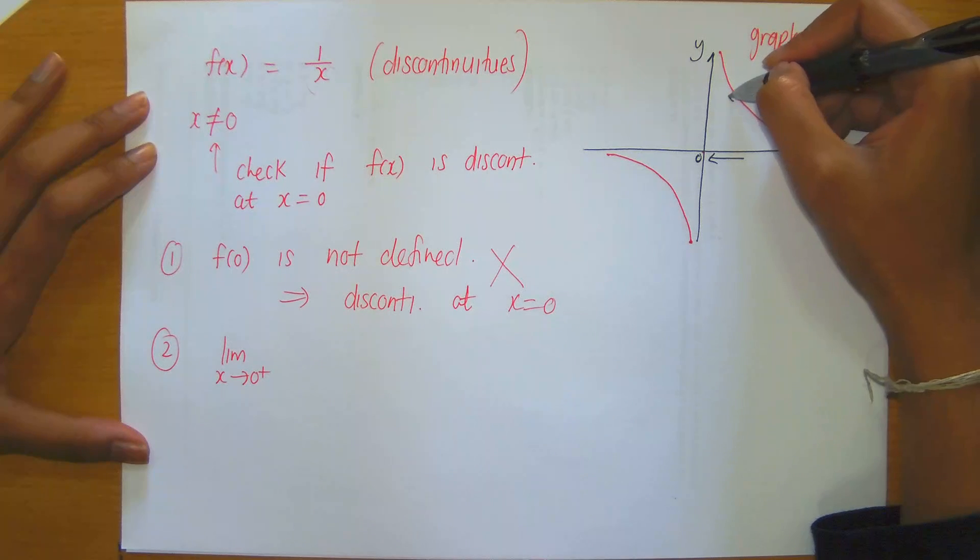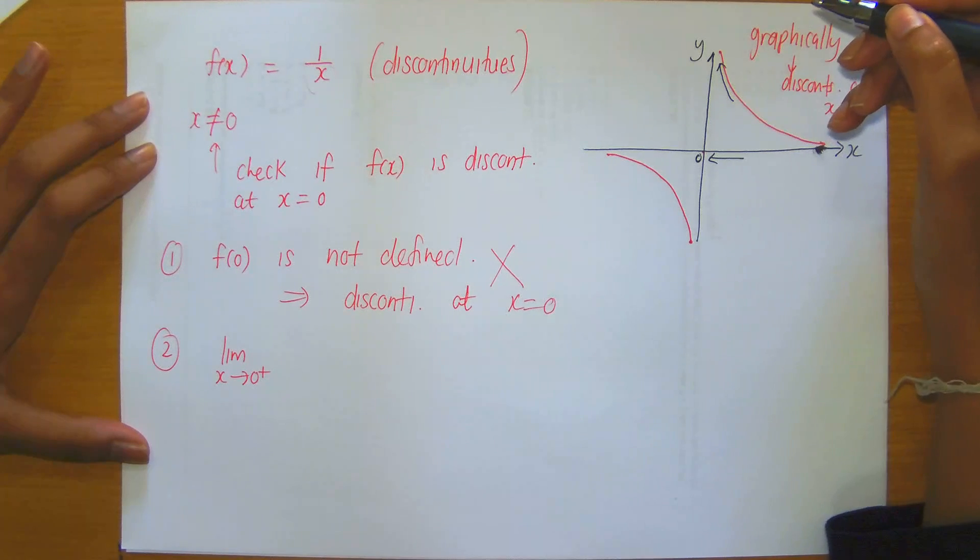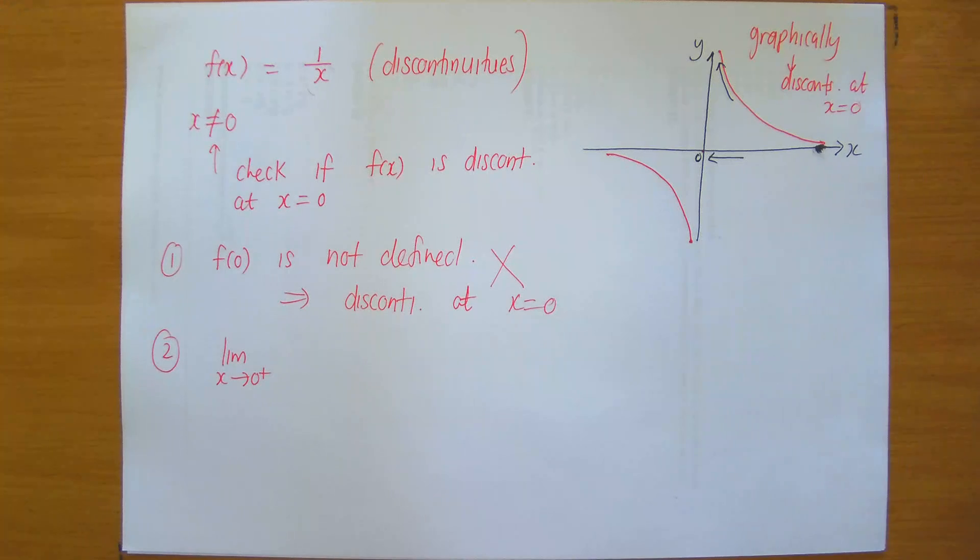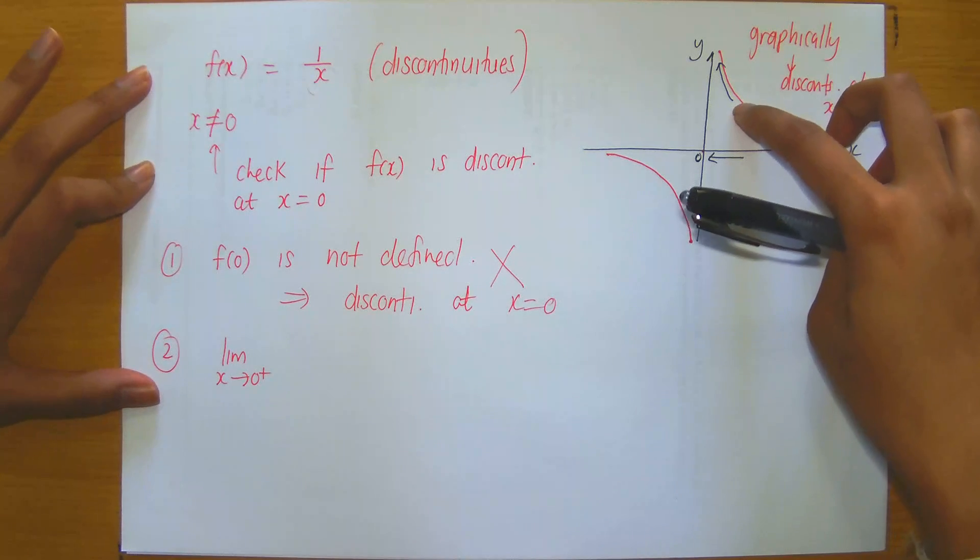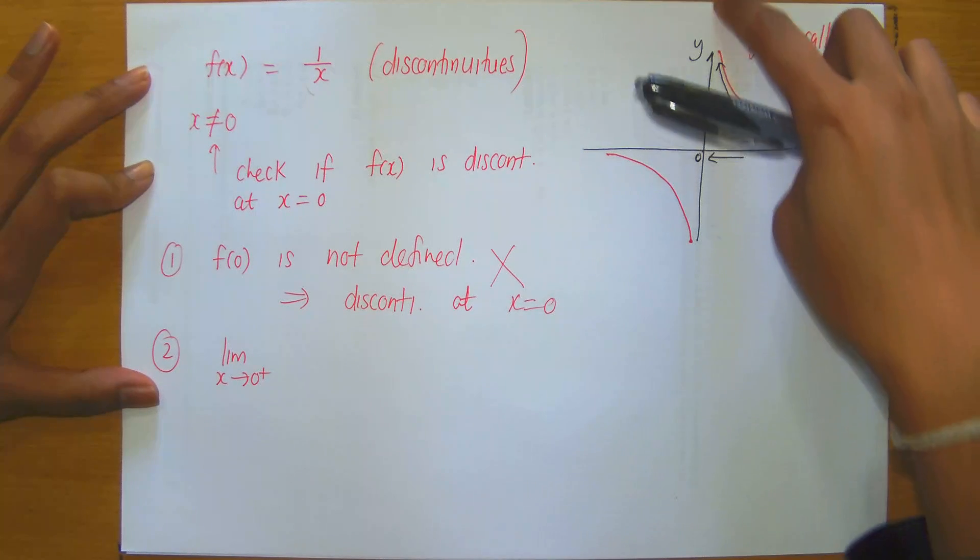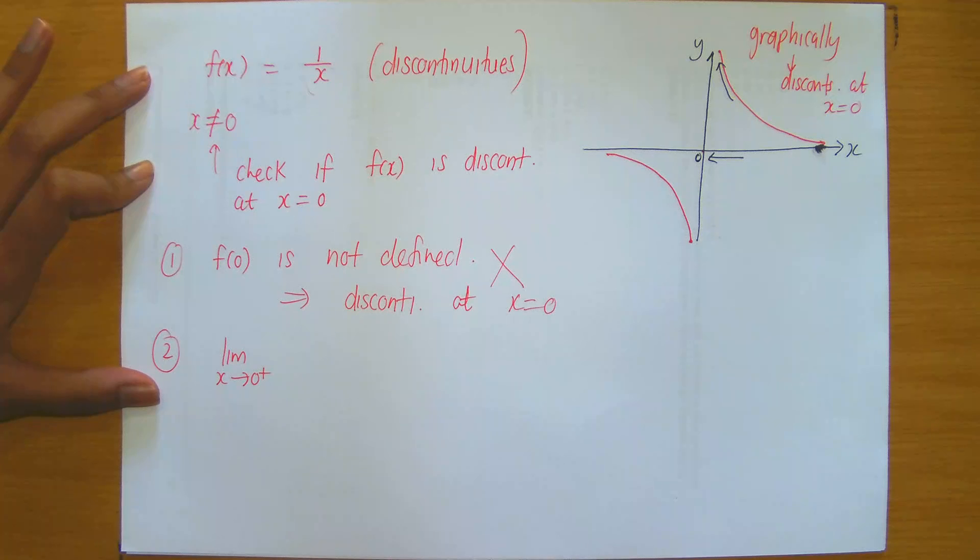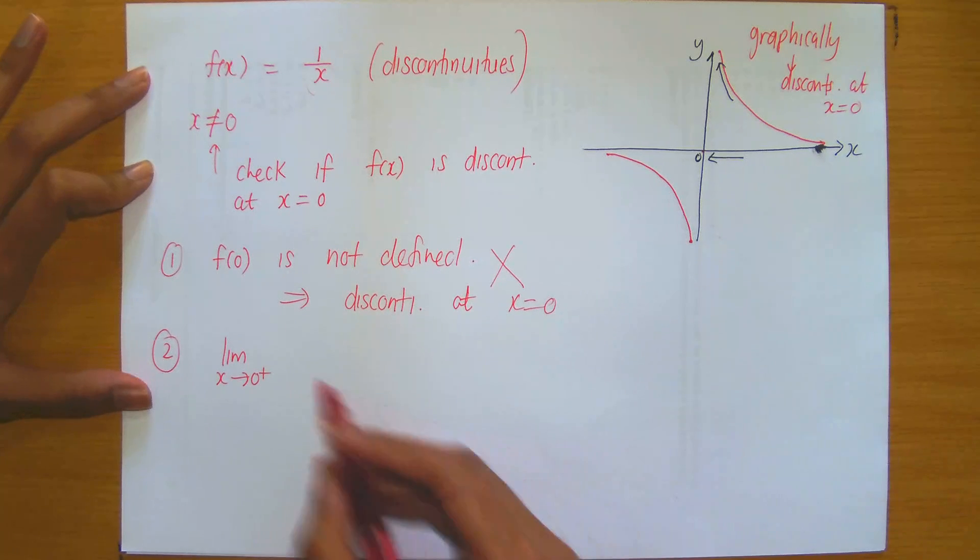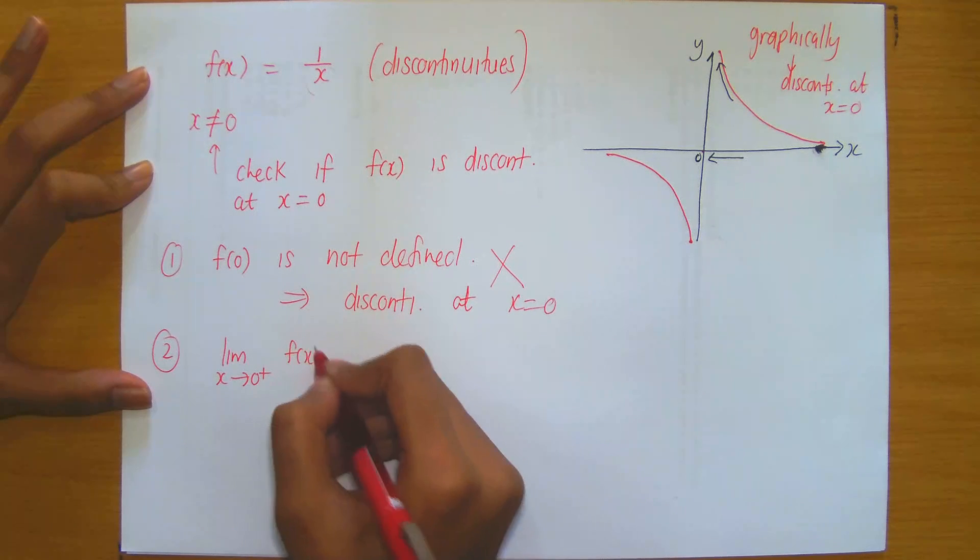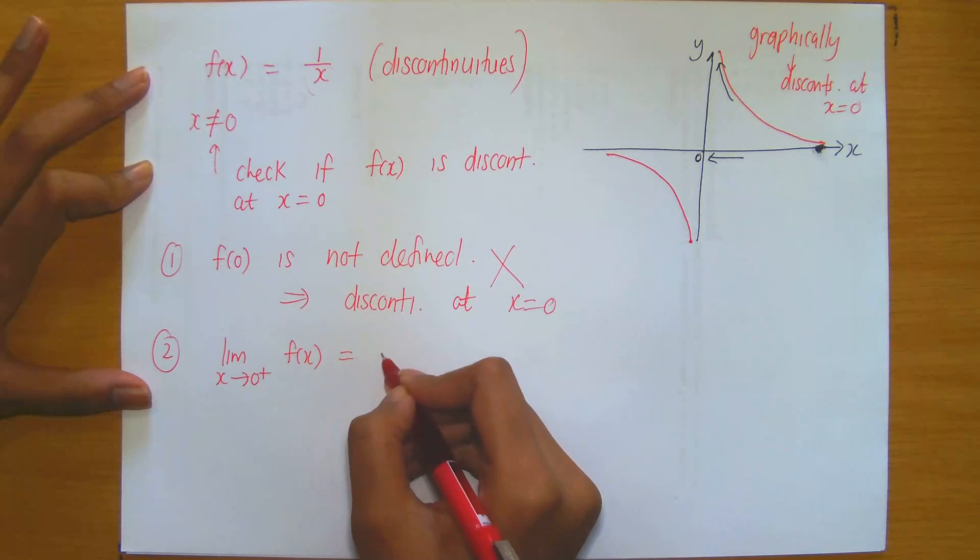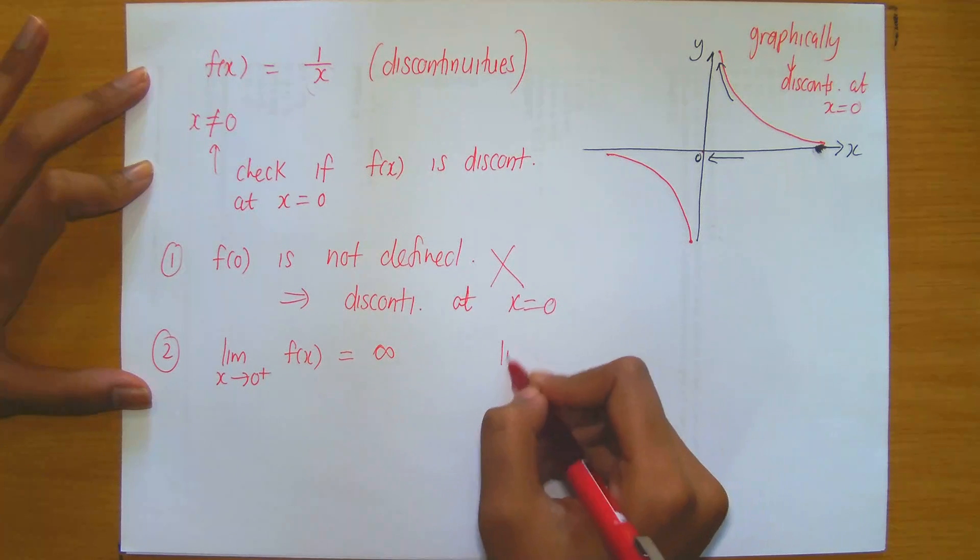And then, of course, what is happening to the graph from the right? What's happening to the graph, as you can see, is that the values of f(x) get larger and larger as we go closer to 0. We observe that the limit of f(x), as x approaches 0 from the right, is positive infinity.